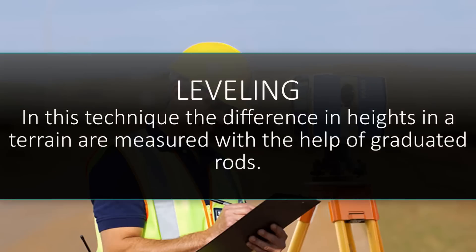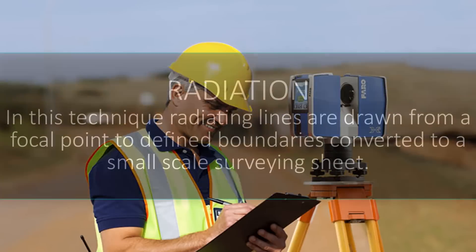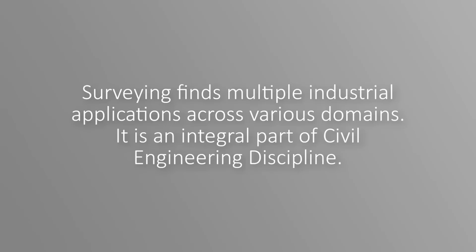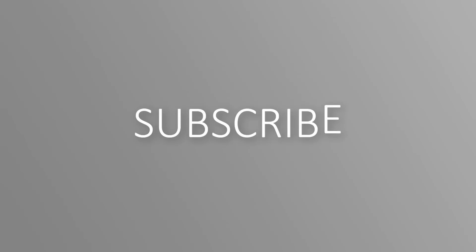In leveling, the difference in heights in a terrain are measured with the help of graduated rods. In radiation, radiating lines are drawn from a focal point to define boundaries, converted to a small-scale surveying sheet. Surveying finds multiple industrial applications across various domains and is an integral part of the civil engineering discipline.